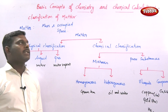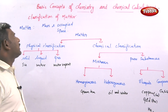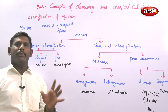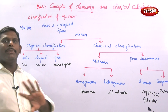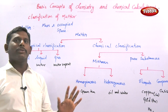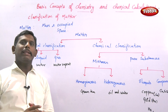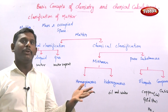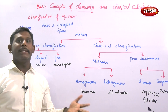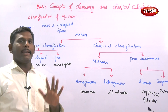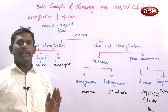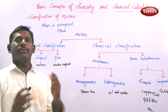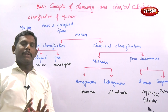The next topic is classification of matter. In the classification of matter, for example, in your classroom, what are all the objects you are seeing? What are all the things around you? Blackboard, windows, benches, chair, table. So these are all the surrounding objects which you can see in your classroom.